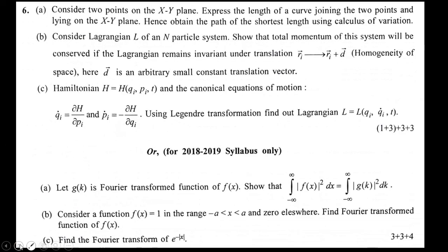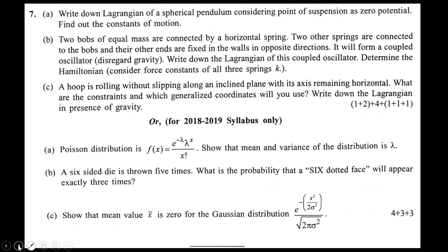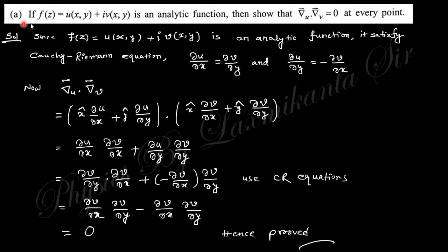The first question says: if f(z) = u(x,y) + iv(x,y) is an analytic function, show that ∇u · ∇v = 0 at every point. Since f(z) is analytic, it satisfies the Cauchy-Riemann conditions: ∂u/∂x = ∂v/∂y, and ∂u/∂y = -∂v/∂x.